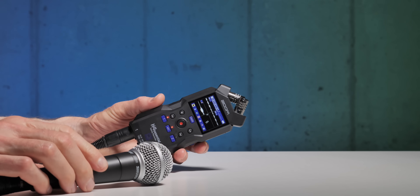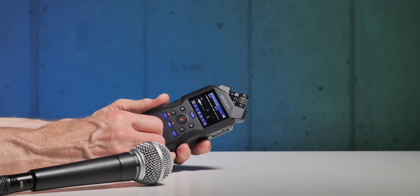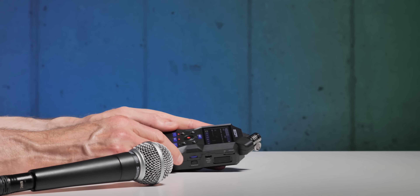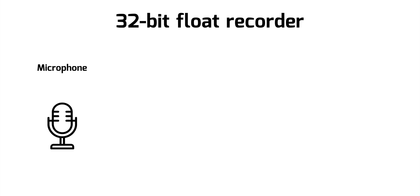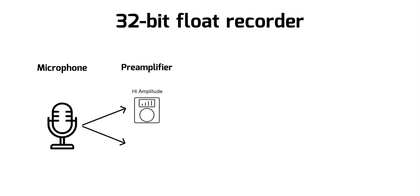Let's get back into the overall signal chain of an ideal 32-bit float recorder — not all of them, they all have their differences, but in my mind this is the ideal. First, it has a microphone which turns sound into an analog electrical signal. It passes that to the microphone input, which takes the weak electrical output of the microphone and passes it on to ideally two or more preamplifiers. Each of these preamplifiers works at a fixed gain — you don't get to set the gain.